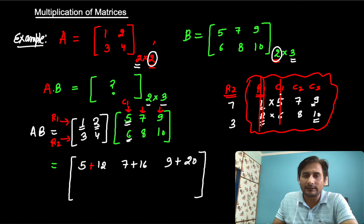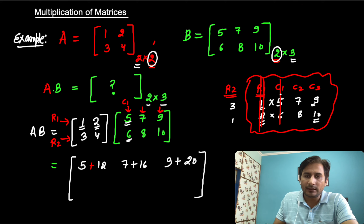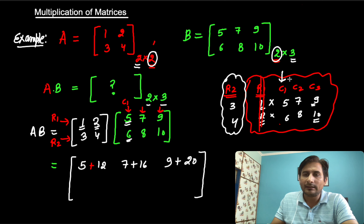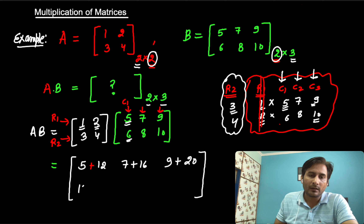Row 2 is 3, 4. And column 1 is 5, 6. So first multiply row 2 with column 1: 3×5 = 15, 4×6 = 24. So 15+24 = 39.